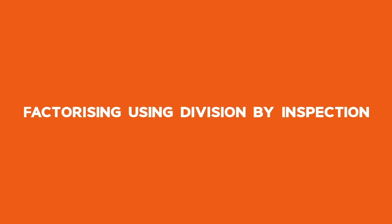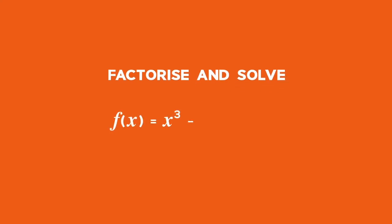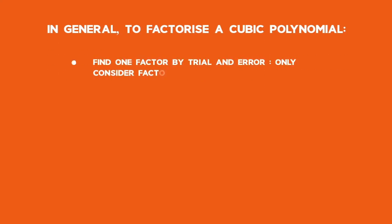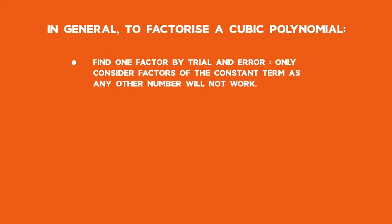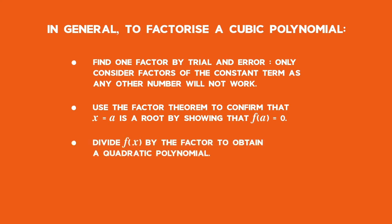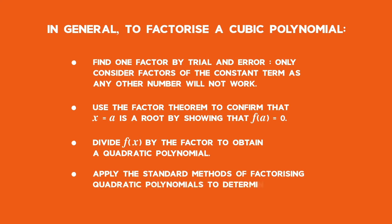Example 3: Factorizing using division by inspection. Factorize and solve f of x equals x cubed minus 5 times x plus 2 equals 0. In general, to factorize a cubic polynomial: find a factor by trial and error using only factors of the constant term; use the factor theorem to confirm that x equals a is a root by showing f of a equals 0; divide f of x by the factor to obtain a quadratic polynomial; then apply standard methods to factorize the quadratic and determine the remaining factors.